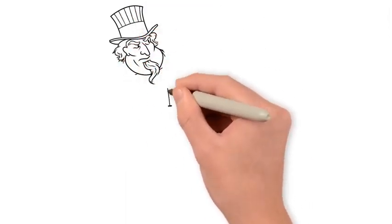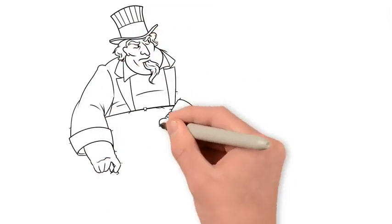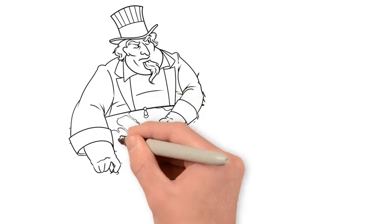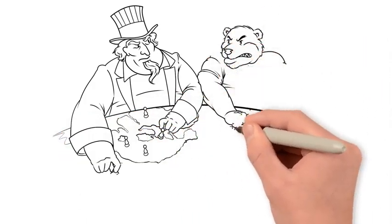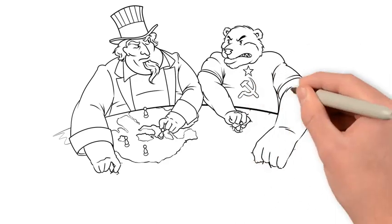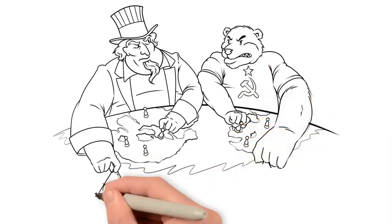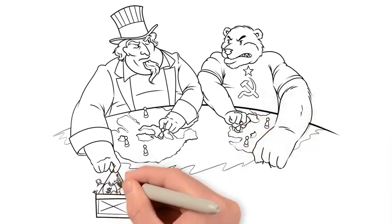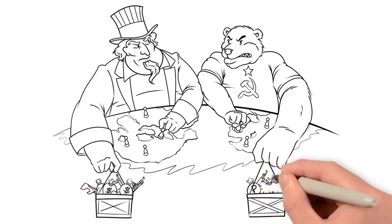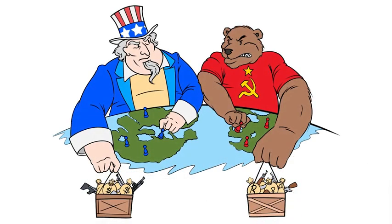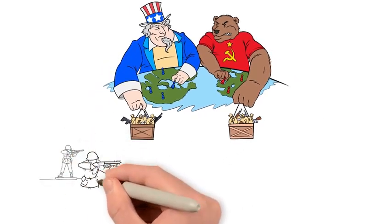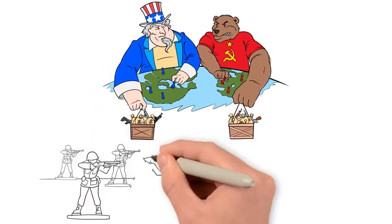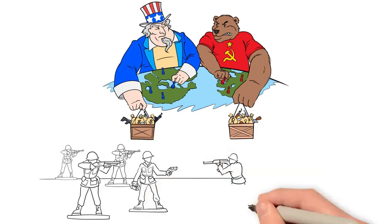The contest between the American and Soviet empires is called the Cold War, because instead of fighting directly, the states waged proxy wars in other countries. The key battlegrounds were economically undeveloped regions, dubbed the Third World, the First World being Western democracies and the Second World being communist dictatorships. The American and Soviet governments supplied weapons to opposing sides in Third World conflicts, vying to install puppet governments.